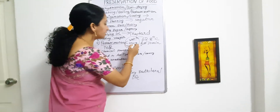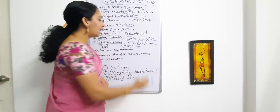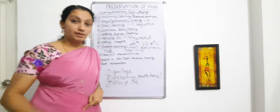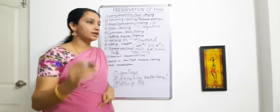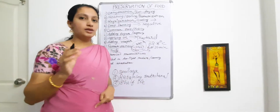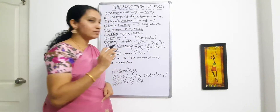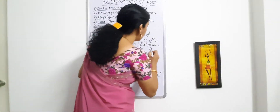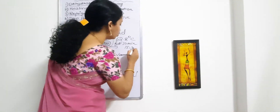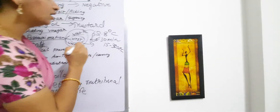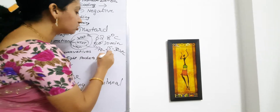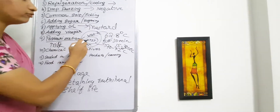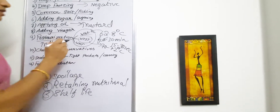Next is the HTST method — High Temperature Short Term method. Here the holding time is much less; it is only 15 to 30 seconds, compared to 30 minutes in the VAT method. The temperature followed for the HTST method is 70 to 72 degrees Celsius.